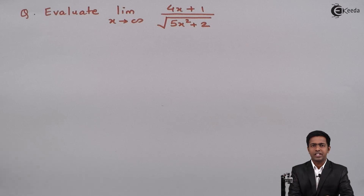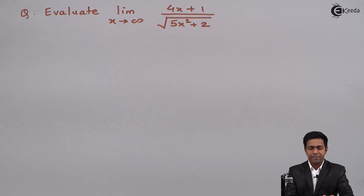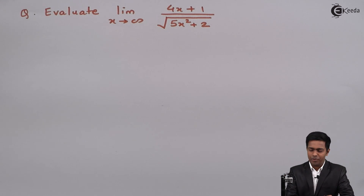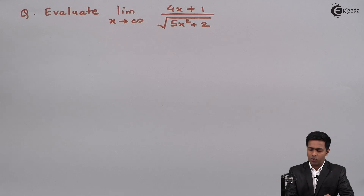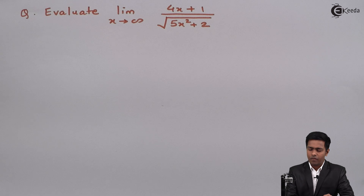Hello friends. In this problem we have to evaluate the limit as x tends to infinity of (4x + 1) divided by the square root of (5x² + 2).